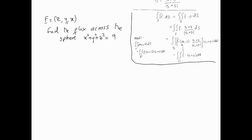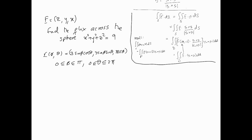For the vector field F = (yz, yx), find the flux across the sphere x² + y² + z² = 9. Parametrization is our first target. Using φ and θ as before, the parameterization r(φ, θ) has φ between 0 and π and θ between 0 and 2π — a full sphere with radius 3, so there is a factor of 3 replacing rho in the spherical polar coordinates.